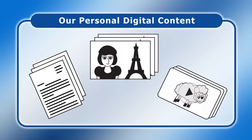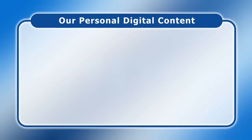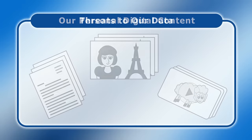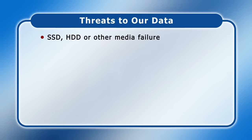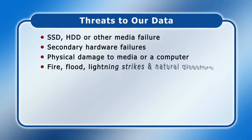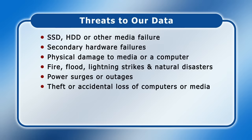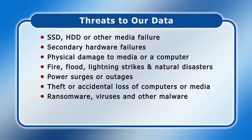Today most people have personal digital content including documents, photographs and videos that would be impossible to replace if they were lost. The starting point for protecting such data should be a review of the threats it faces, which include SSD, hard drive or other media failure; secondary hardware failures such as a broken power supply that destroys a drive or corrupts the data on it; physical damage to media or a computer; fire, flood, lightning strikes and natural disasters; power surges or outages; theft or accidental loss of computers or media; ransomware; viruses and other malware; hackers; and finally user error — for example if somebody accidentally deletes a file or reformats a drive that's not backed up. Whilst user error is by far the most common reason for data loss, all of these threats regularly destroy data.